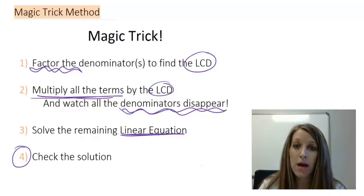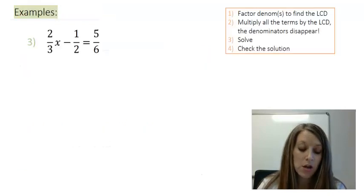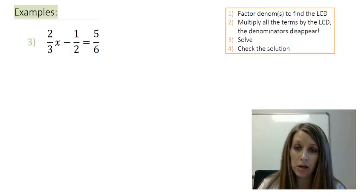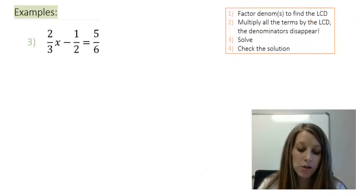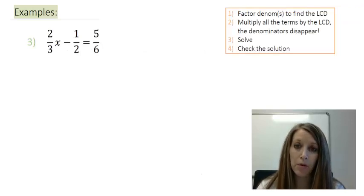So we are going to do this magic trick method on the last two examples that we have seen just in the previous videos. So example three here, which is an easier of these rational equations, and that beast of a problem, example four. So let me show you how to use the magic trick in example three, and then maybe you'll be able to apply it to example four on your own.